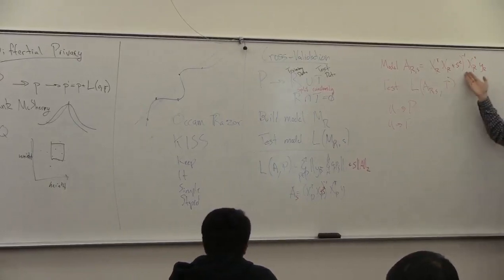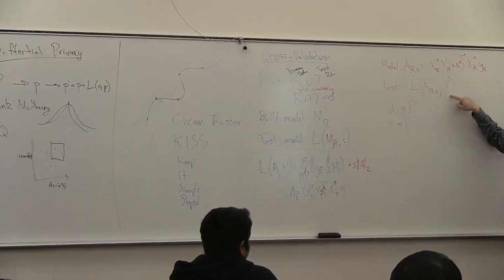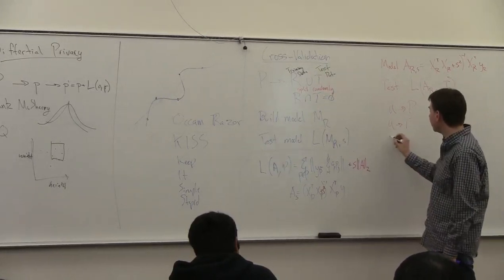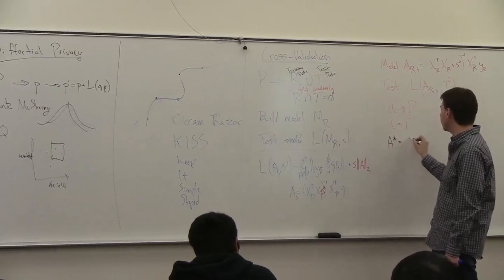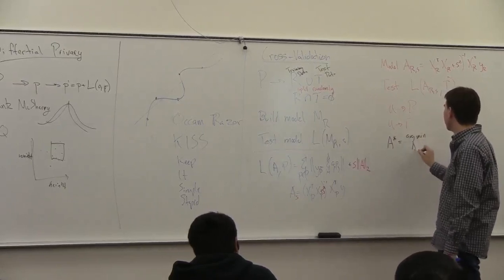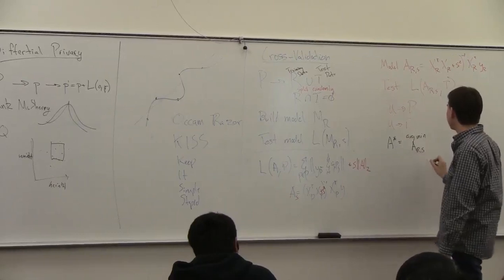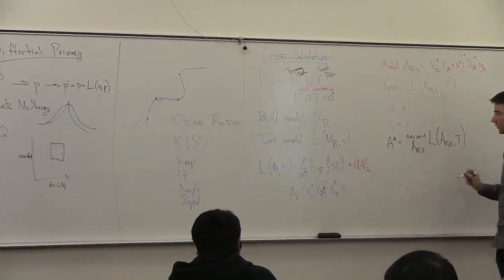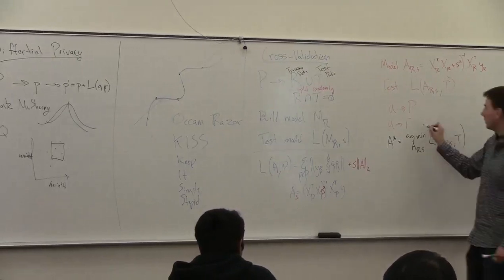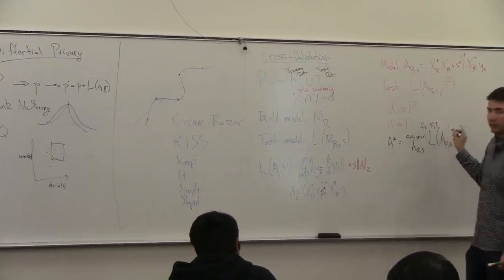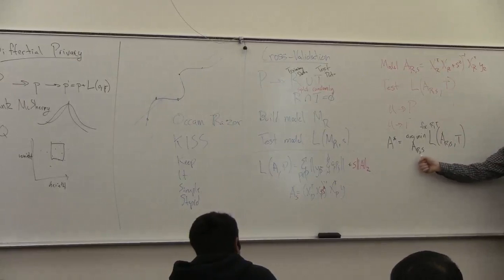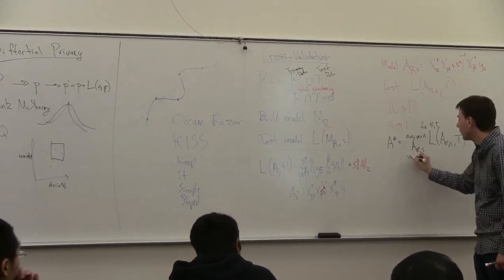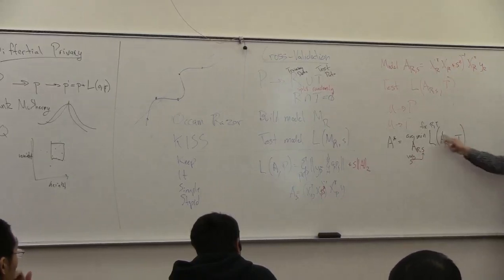I've only done this once — I picked one value S and tested it. But I want to minimize this over all values S. The goal is to return the model which is the argmin over S of the loss L(A_{R}(S), T). So you look over all models, fixing R and T (the split), and you vary the parameter S to find the best model on R.